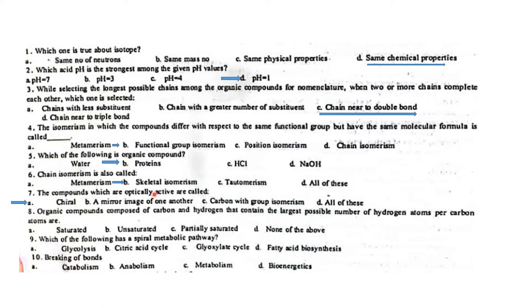Organic compounds are composed of carbon and hydrogen and contain the largest possible number of hydrogens. Carbon is unique in that it can form polymers. Carbon is found throughout nature and can bond with other elements extensively, as seen in polymer formation.